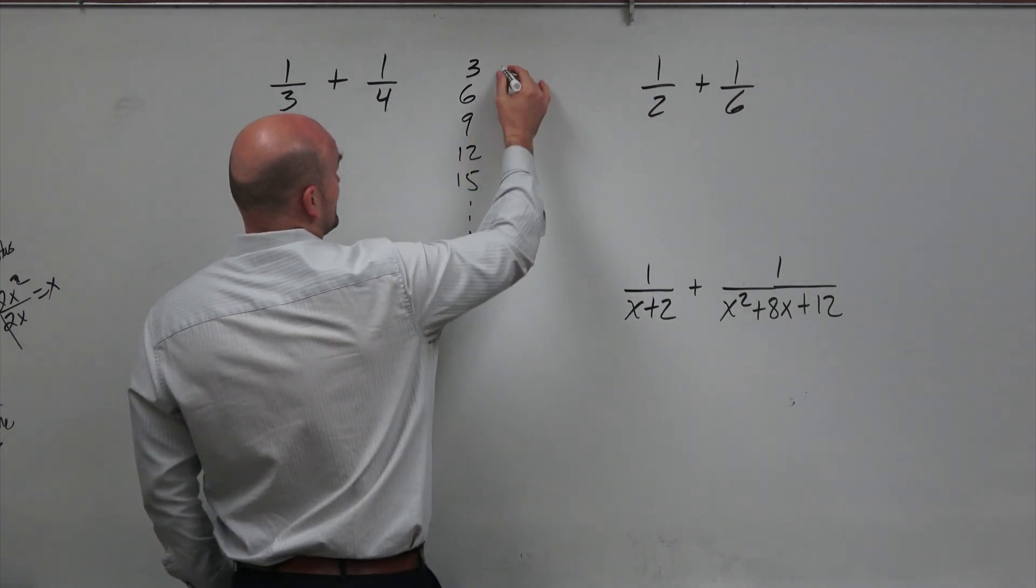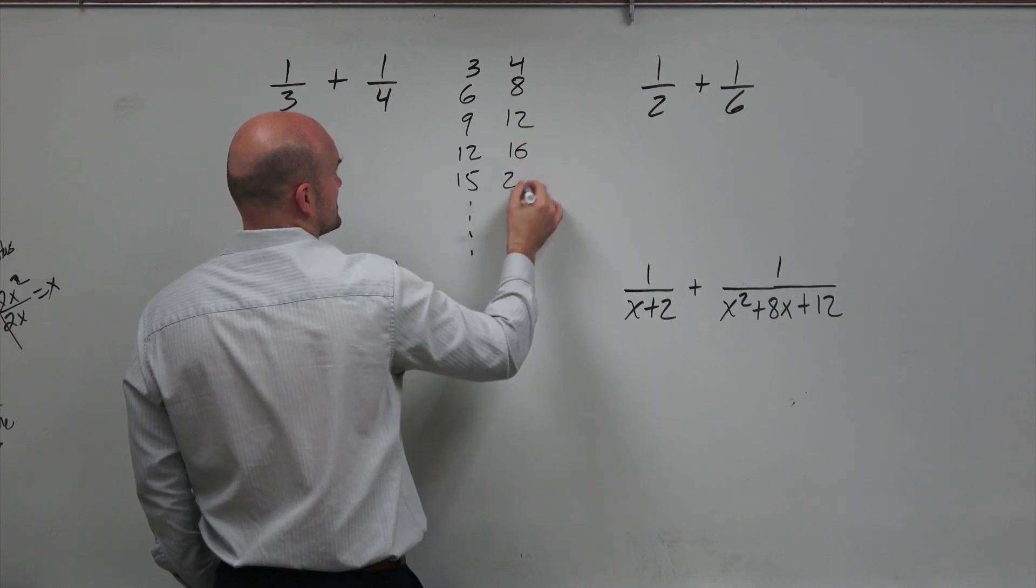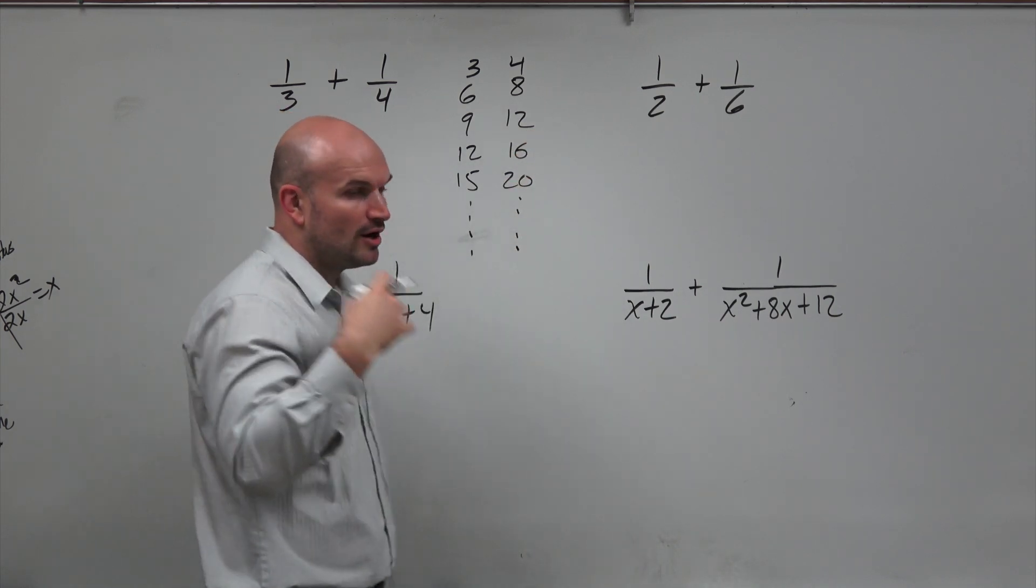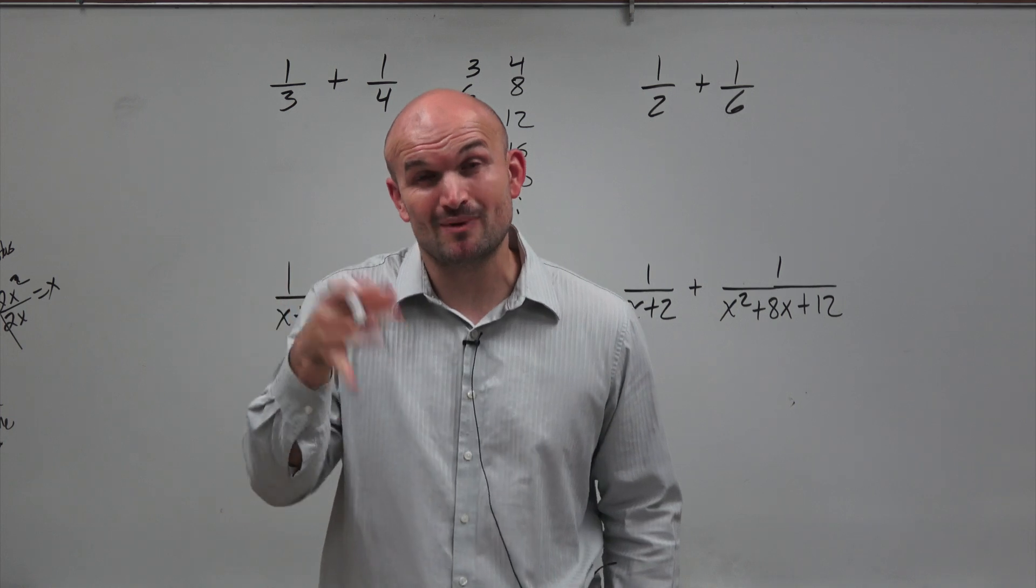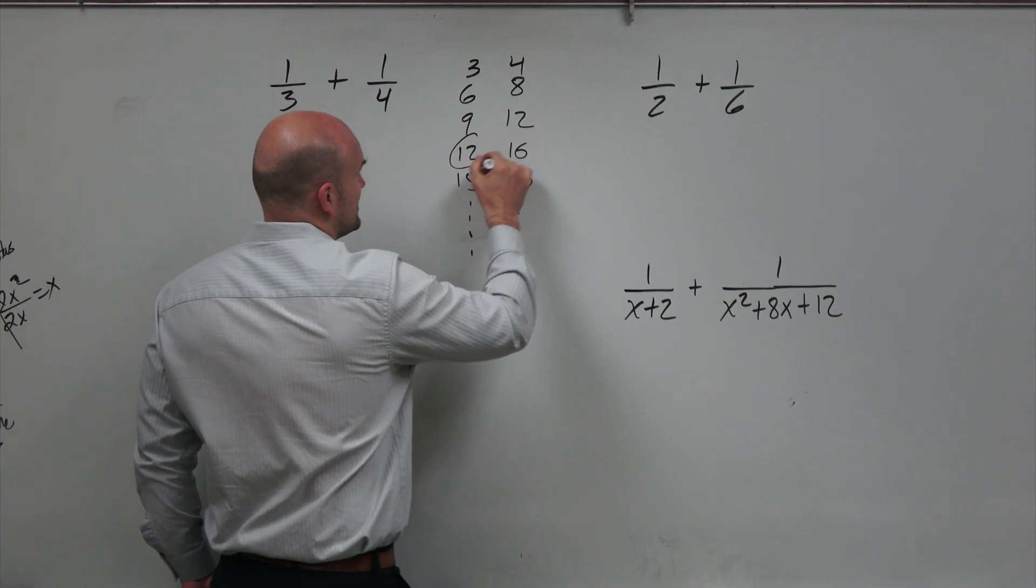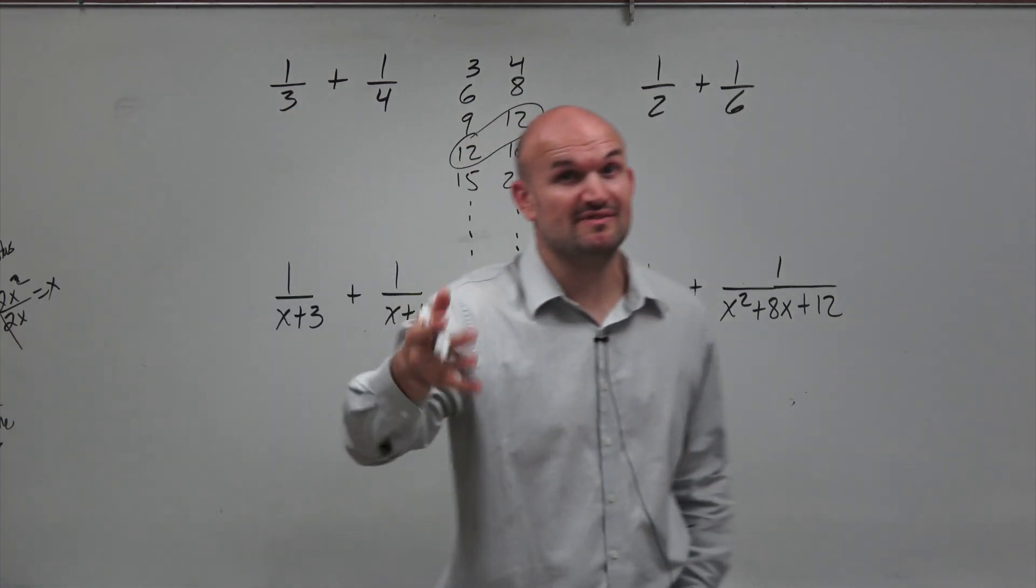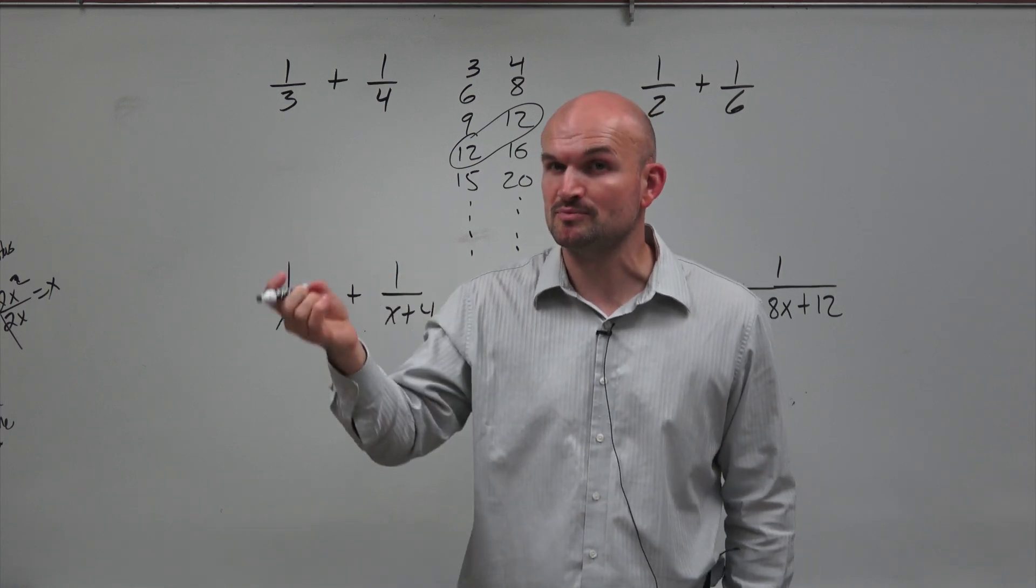Then I can do that same thing with 4, just list all the multiples: 4, 8, 12, 16, 20. But hopefully, once you notice that once you write the same number, that is the smallest multiple that they have in common. In this case, it's going to be 12. So 12 is going to be our smallest number that 3 and 4 divide into. So that's what we call our least common multiple.